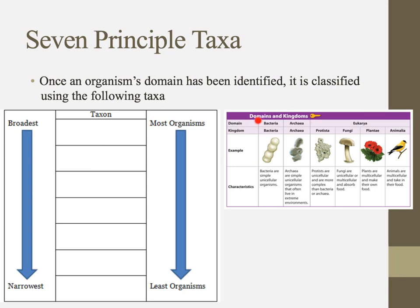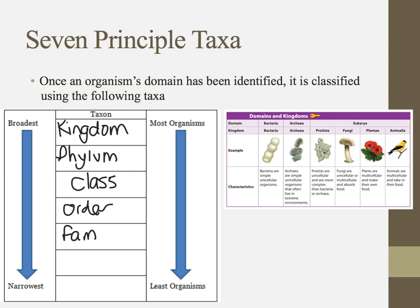Once an organism's domain has been established, we can classify it using more and more narrow classifications. They go in this order: the broadest is kingdom, followed by phylum, class, order, family, genus, and species. Kingdom includes the most organisms, and as we go further down they get more and more narrow, all the way to species, which includes one organism.